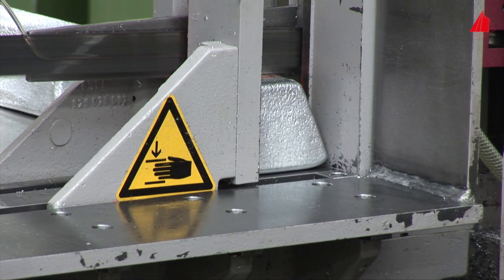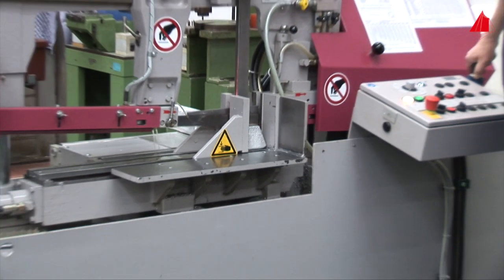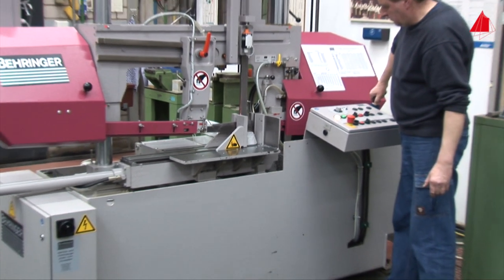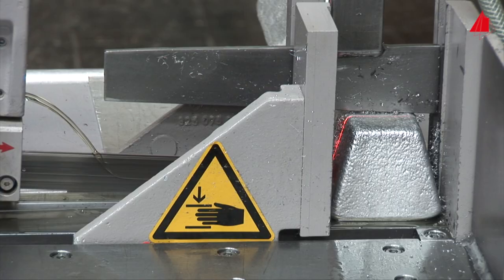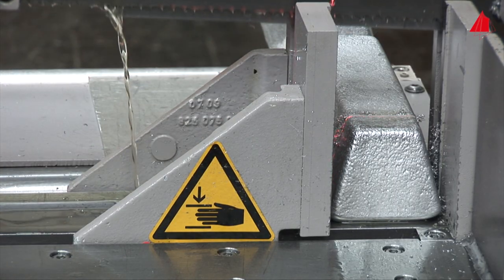Then the bandsaw gently sets onto the block and cuts it slowly under intensive liquid cooling. It is important to keep the material as cool as possible to avoid changes in the material structure. That's it! The ingot has been sectioned.